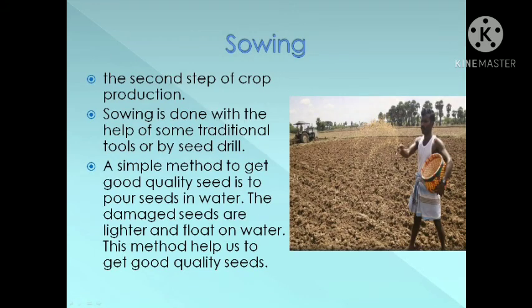Sowing: This is the second step of crop production. Sowing is done with the help of some traditional tools or by seed drill. A simple method to get good quality seed is to pour seeds in water — the damaged seeds are lighter and float on water. This method helps us to get good quality seeds.